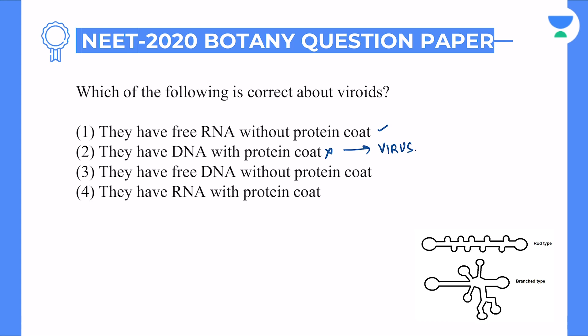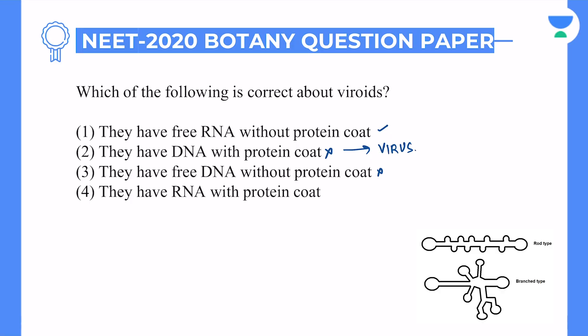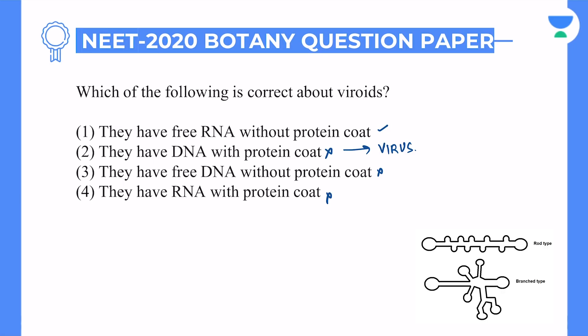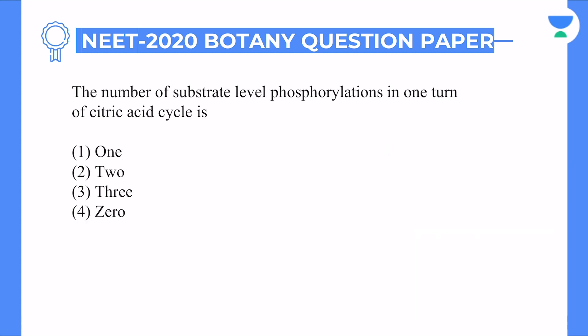They have free DNA without protein coat — not DNA. Genetic material is RNA with viroids, and that is also very small, low molecular weight. The last option: they have RNA with protein coat — no, protein coat is not going to happen with viroids. So protein coat is not present and DNA is not the genetic material. Option number one will be the correct answer.